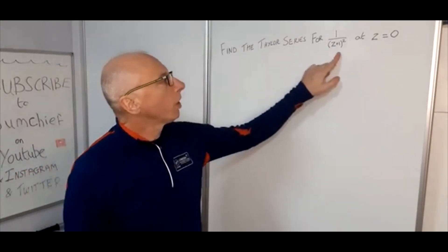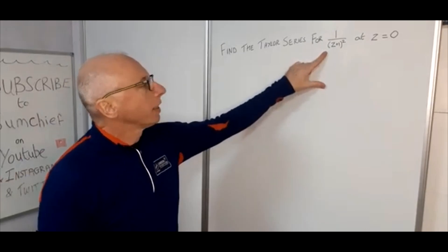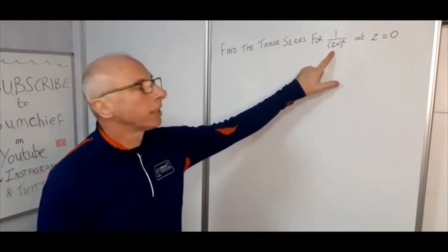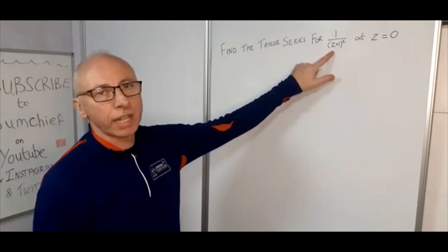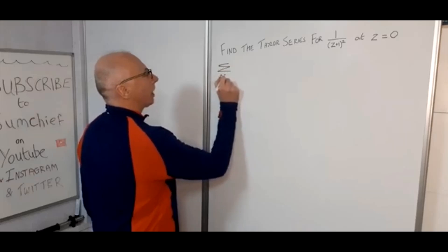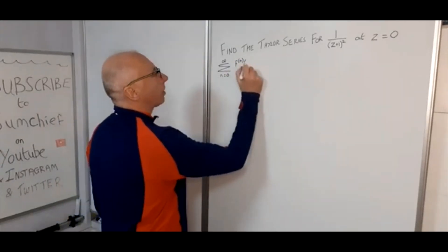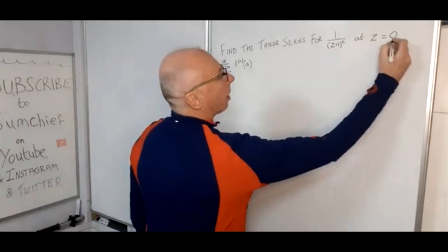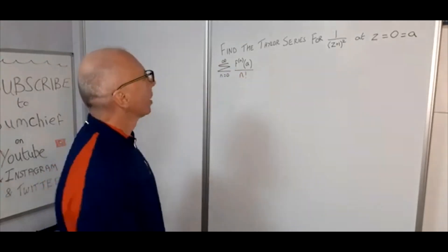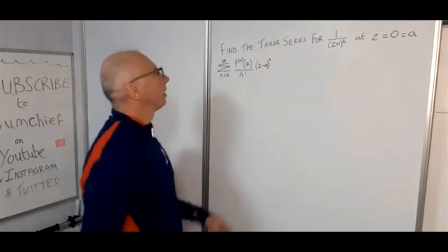We are going to have a look at the Taylor series for 1 over (z+1)² at the point where z equals 0. There is an interesting pattern in this Taylor series — I did a video recently on the residue theorem where this Taylor series was required. The Taylor series formula is the sum from n equals 0 to infinity of the nth derivative valued at point a, divided by n factorial, times (z minus a) to the power of n. In our case, a equals 0.